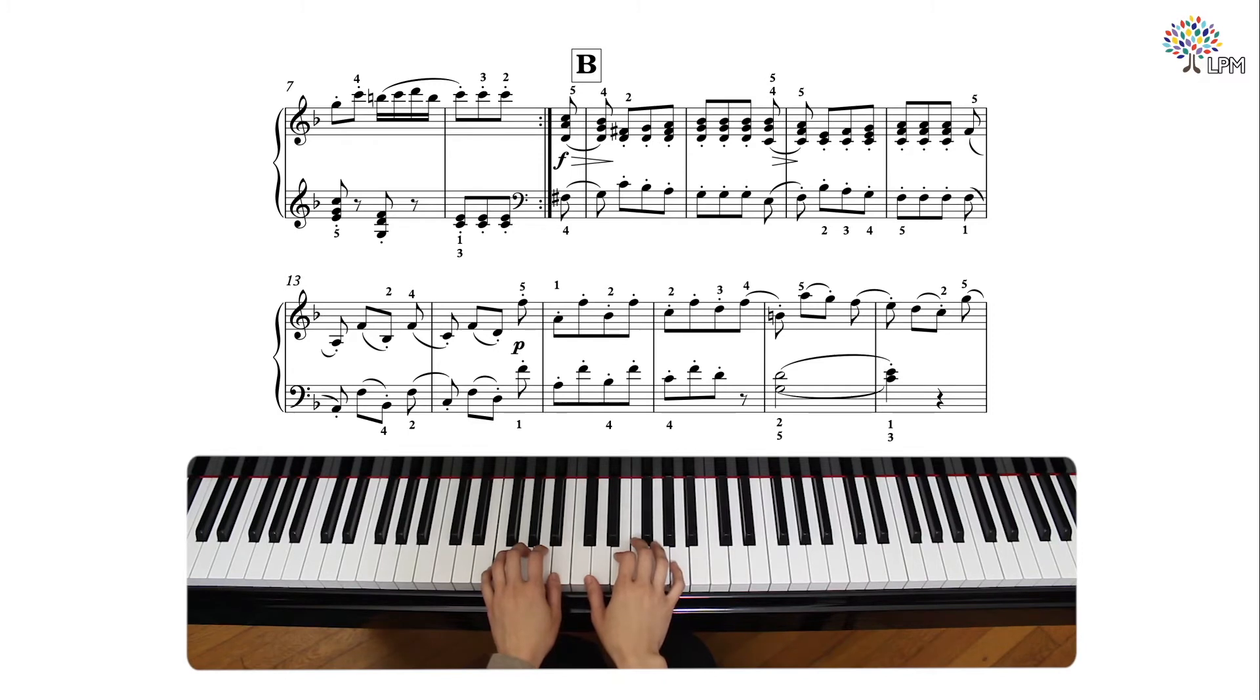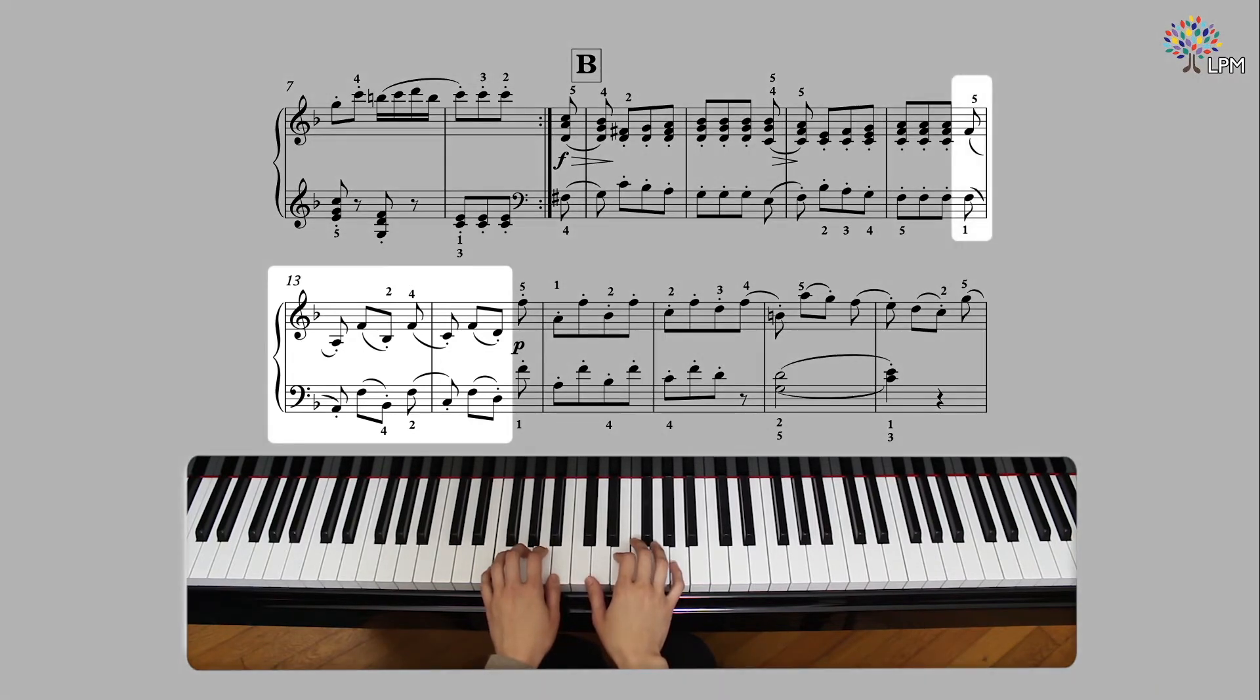Haydn then uses the two-note slur motif from the beginning of the piece throughout the rest of the B section, most of the times descending in different intervals.